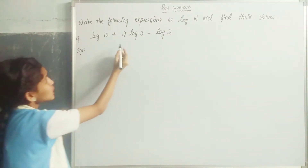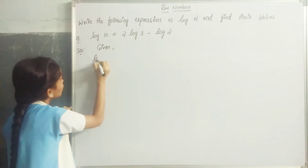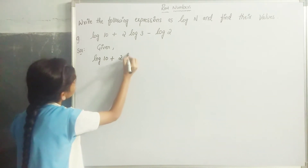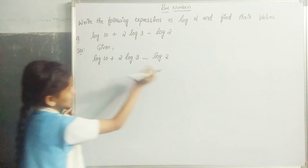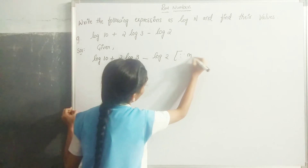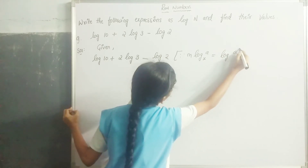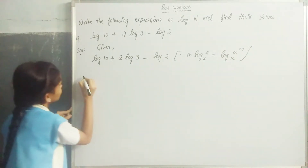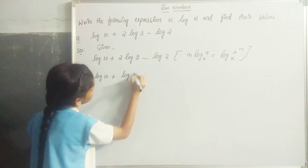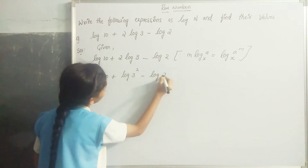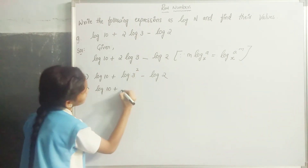Given log 10 plus 2 log 3 minus log 2. Applying the power rule, 2 log 3 becomes log 3 squared, which is log 9. So we have log 10 plus log 9 minus log 2.